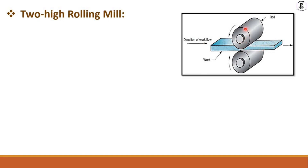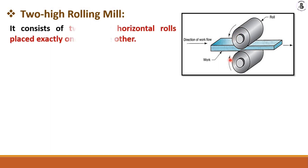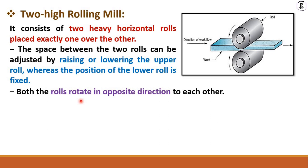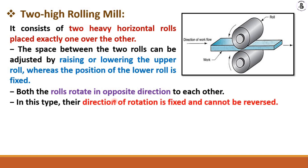In two-high rolling mills, both rollers rotate in opposite directions. Two heavy horizontal rolls are placed exactly one over the other. The space between the two rolls can be adjusted by raising or lowering the upper roller, whereas the position of the lower roll is fixed. According to the required cross-sectional area, the center distance of the two rollers is adjusted.